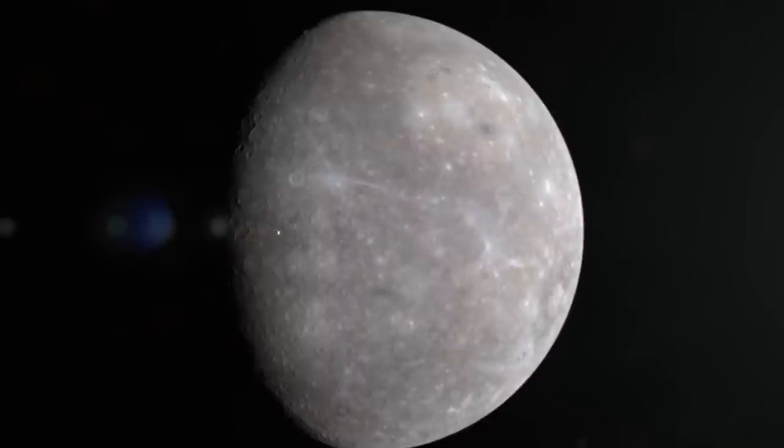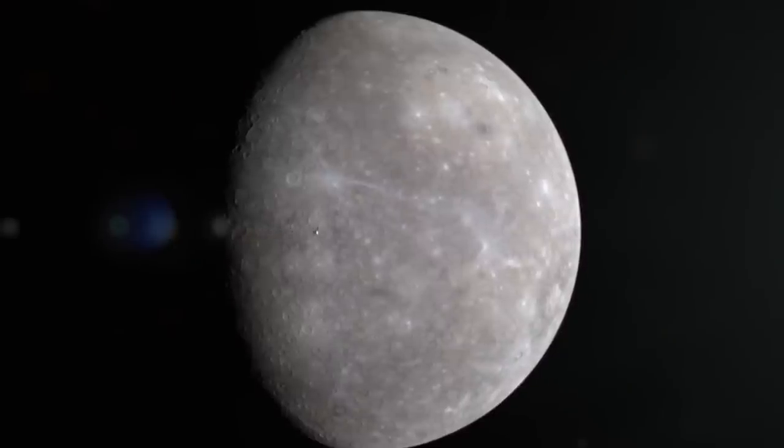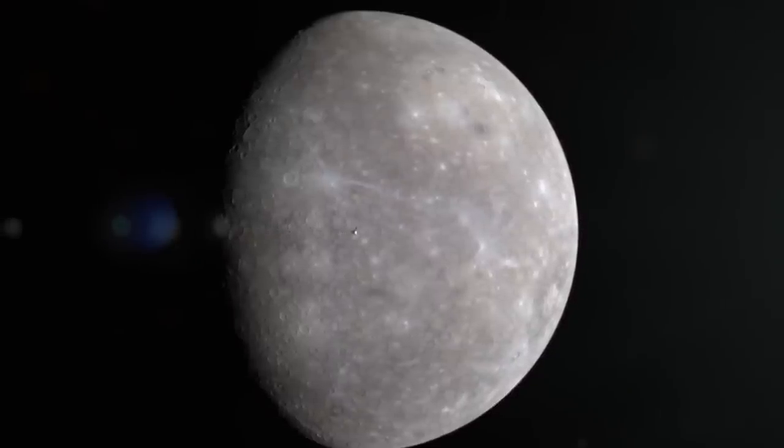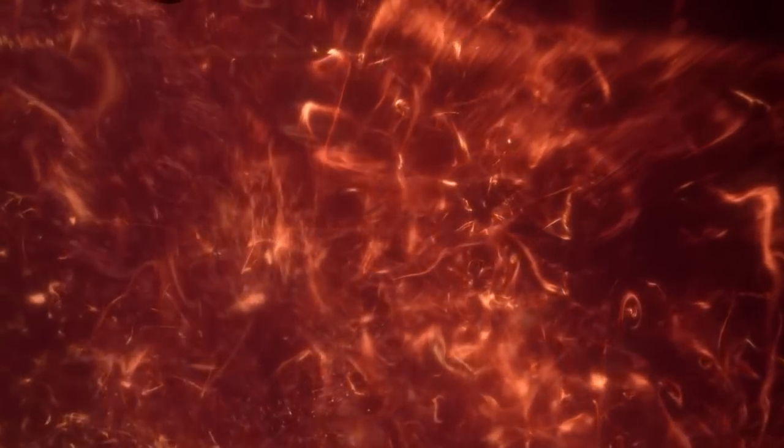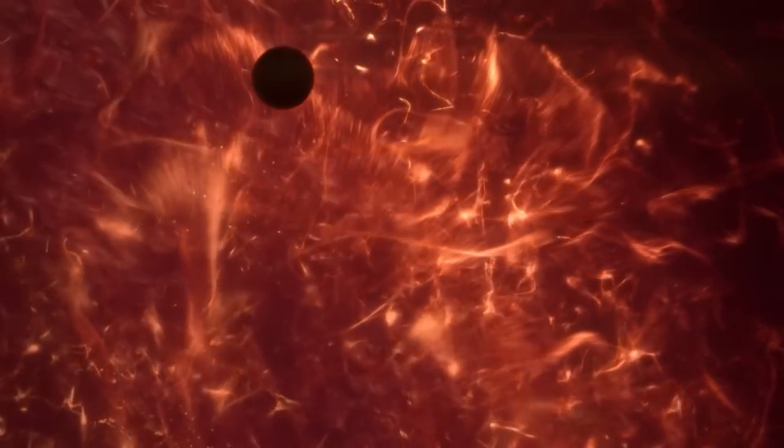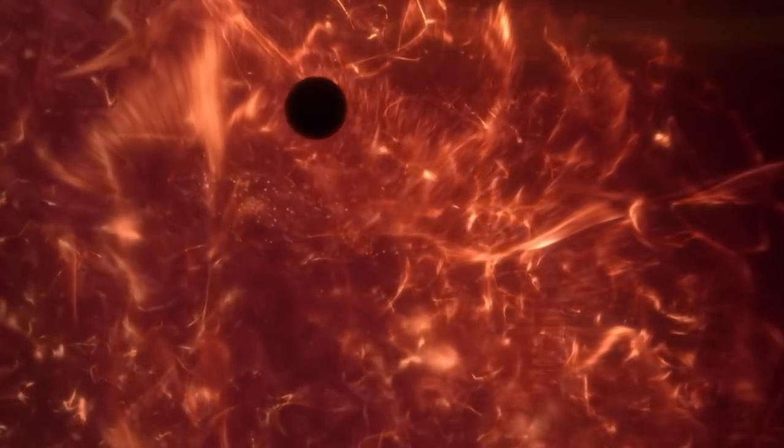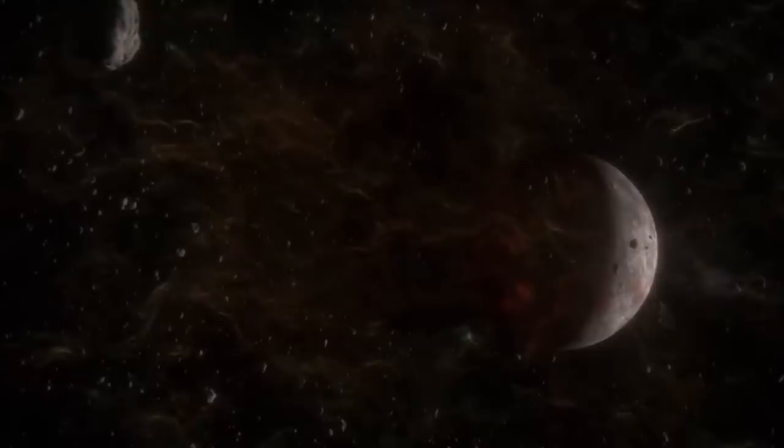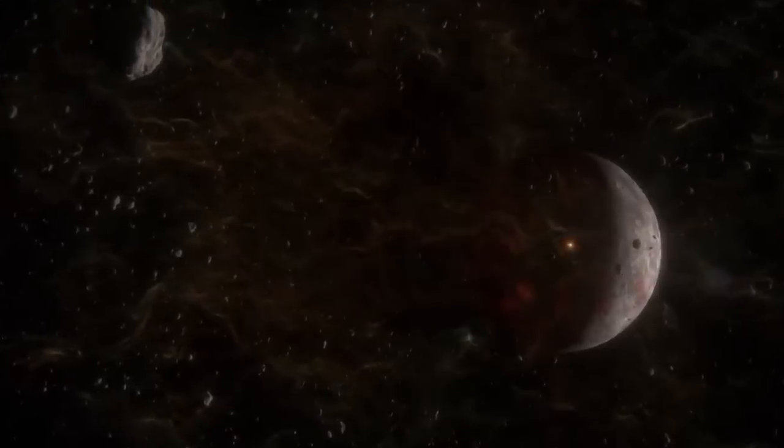Closest to the sun is Mercury. Mercury is difficult to observe because of its proximity to the sun. It is very hot, up to 430 degrees or 806 degrees Fahrenheit on its sunny side. But the temperature can drop to minus 180 degrees or 356 degrees Fahrenheit in the shade.